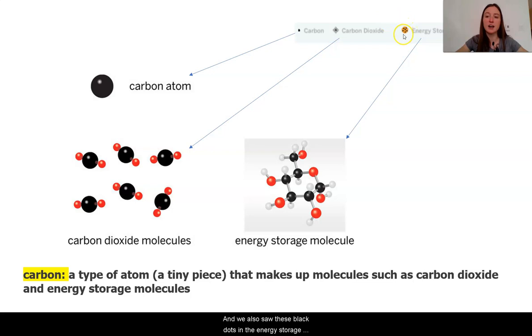Now, we also saw these black dots in the energy storage molecules. And we know that this means that they also contain carbon. Carbon is a type of atom, which is a tiny piece that makes up molecules such as carbon dioxide and energy storage molecules. It seems like it might be important because it's included in both of the kinds of molecules that we can see in the digital model.